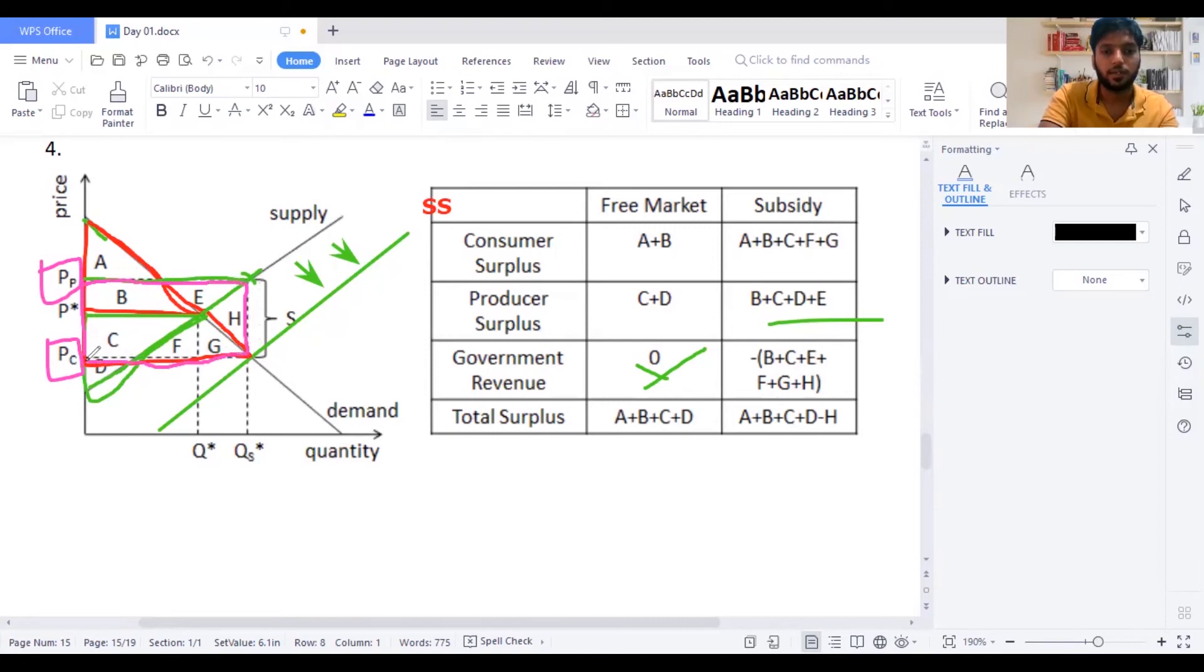So the entire area, this entire area is government's loss. Because government needs to buy it. So government bears B, C, E, F, G, H. Then we have, so normally here you don't have dead weight loss. Dead weight loss is found in taxes. So in subsidies, you won't find dead weight loss.